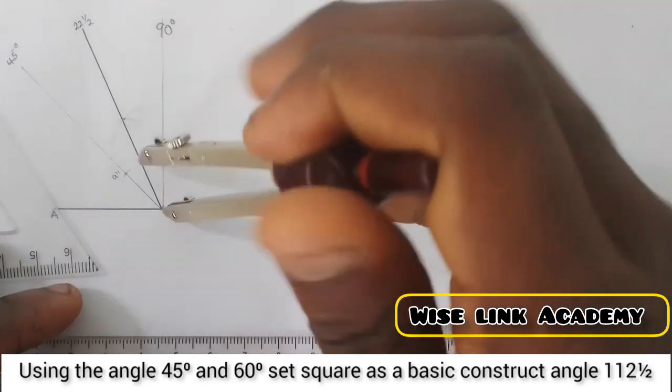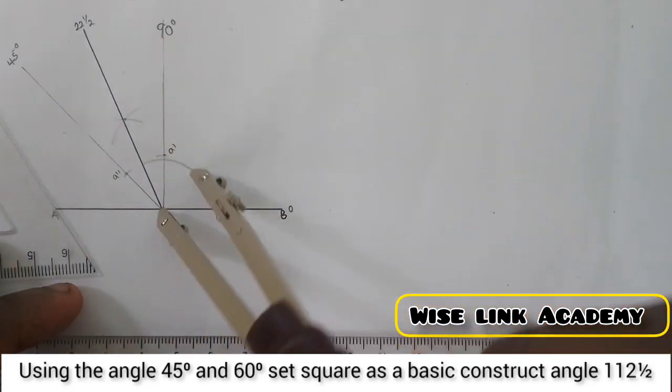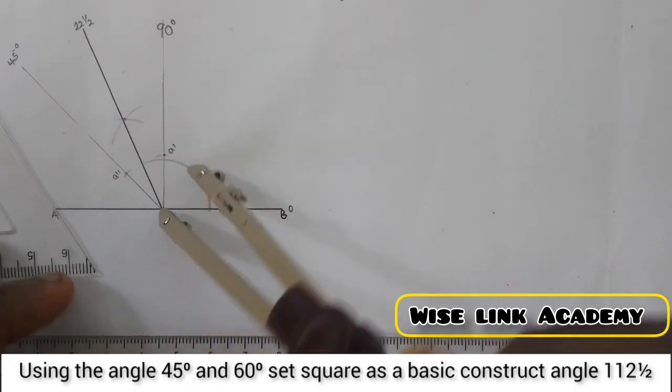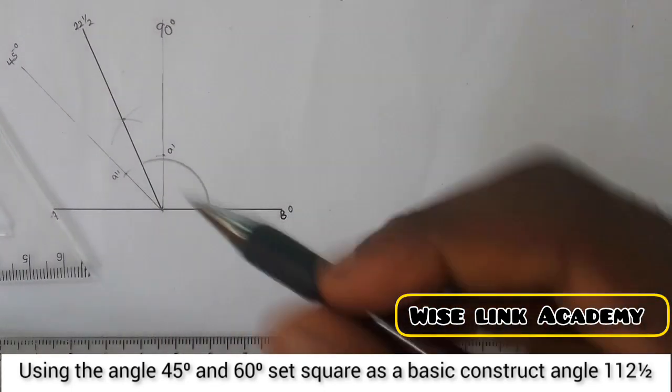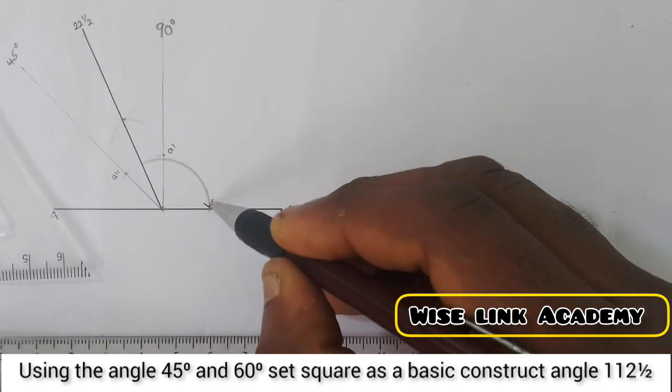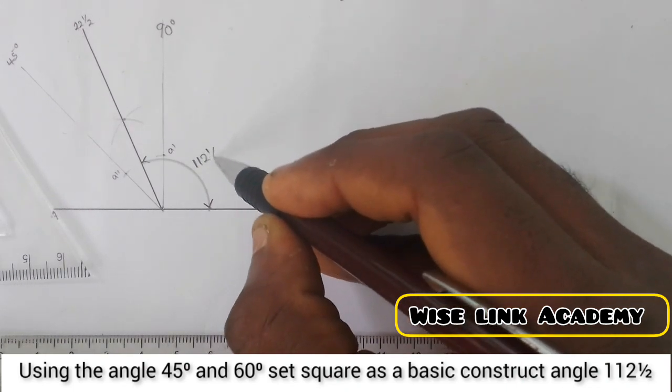So therefore, the angle from this point here, down here, it's going to be 112.5. So take it and compare this way. The angle from this point here to this point is going to be 112.5.